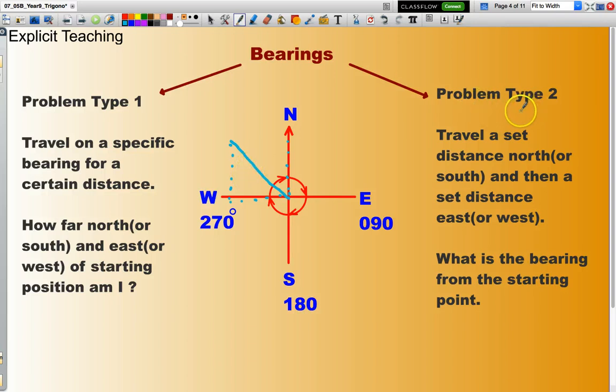Problem type 2. Say for instance I travel a set distance north and a set distance south. So, right, I'll start here. I travel a set distance south and then I travel a set distance east. The question might ask what bearing from my starting position am I? In other words, what is this bearing here?